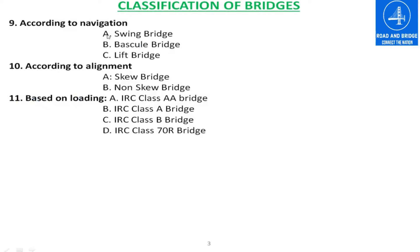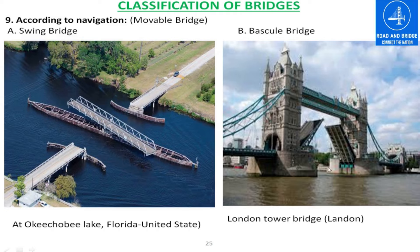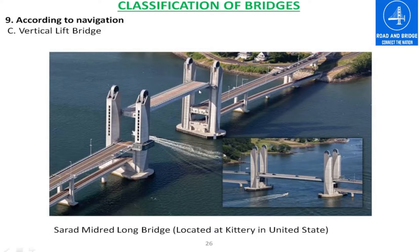According to navigation, the bridge can be classified into three categories: swing bridge, bascule bridge, and vertical lift bridge. The span of the swing bridge can swing horizontally to make clearance for waterway traffic. The two leaves of the bascule bridge swing vertically to make clearance for waterway traffic. The span of the vertical lift bridge lifts vertically to make clearance for waterway traffic.